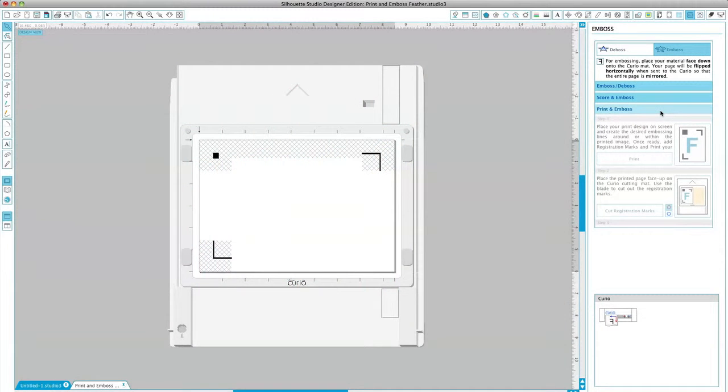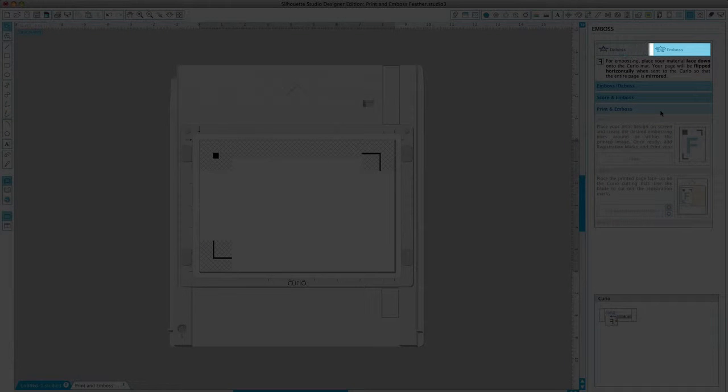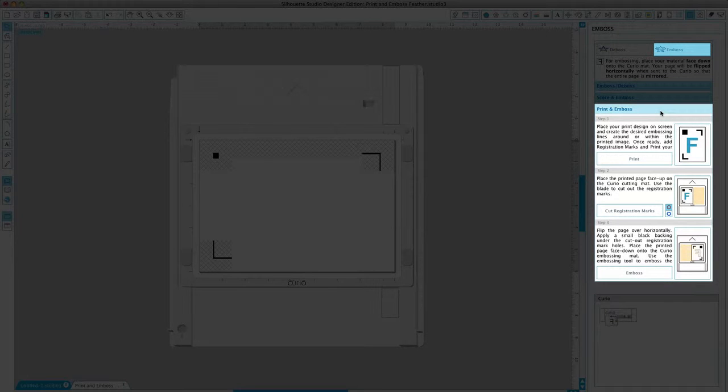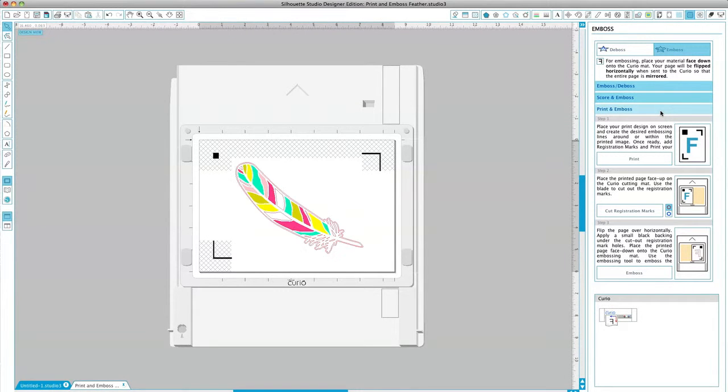In this example, we will be using the print and emboss option. Begin by opening your design in Silhouette Studio, then create the desired embossing lines around or inside of the printed image.